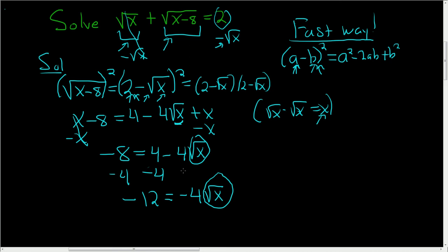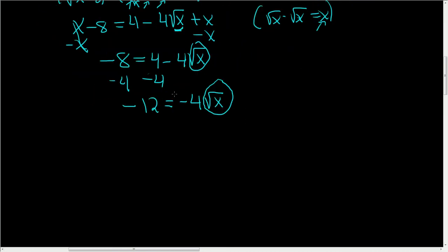Again, we're looking for this. So there's a few things left to do, but it's not hard. So this is being multiplied by negative 4, so to get rid of the negative 4, we divide. So here we have 3 equals the square root of x.